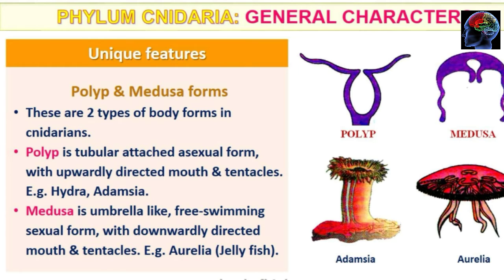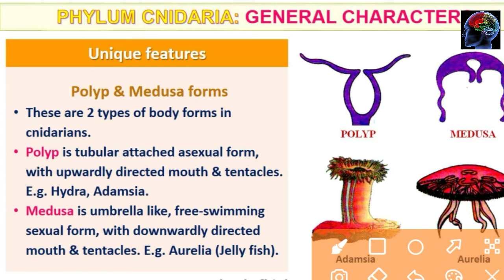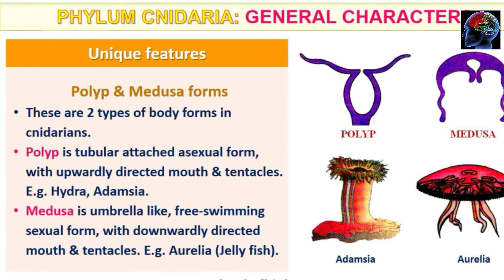Next we will see medusa. Medusa is the sexual reproductive form. It has an umbrella-like structure and is free swimming. In medusa, the mouth is directed downward and tentacles also hang downward. An example of the medusa form is jellyfish.